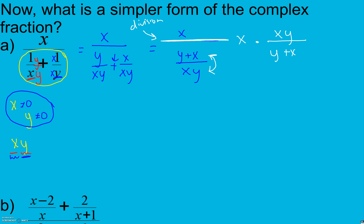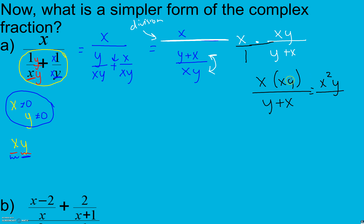I take my x from my numerator and multiply: xy goes to the top, and x plus y goes to the denominator. Since I'm multiplying I multiply straight across — when I don't have a denominator it's one — so I have x times xy over y plus x, which means I get x squared y. I don't distribute there because I'm not adding; I just multiply it all together: x times x is x squared, and a y, over y plus x.